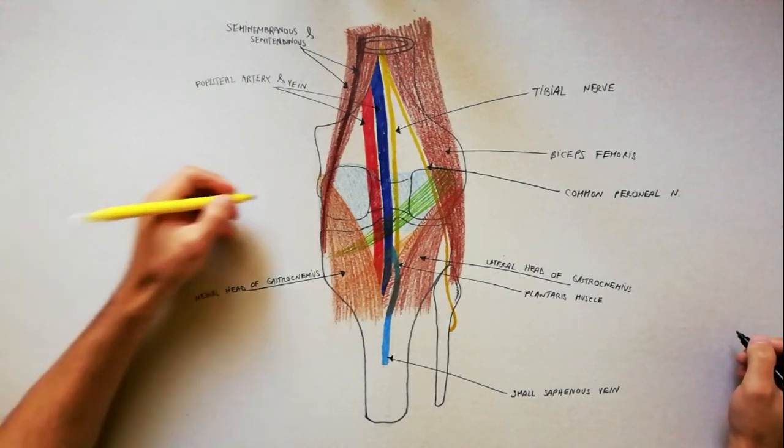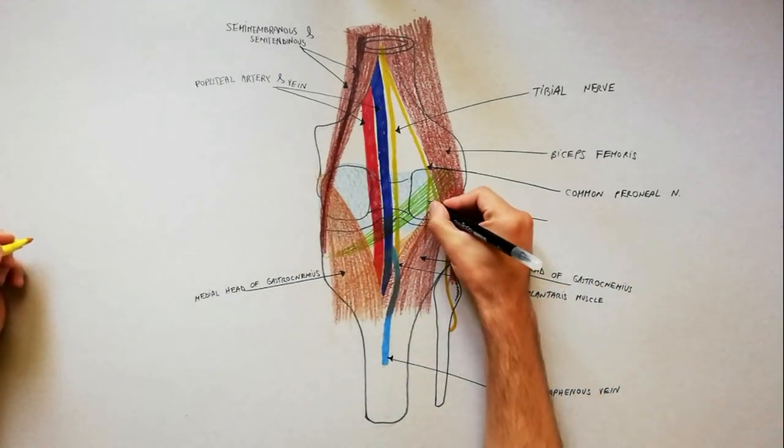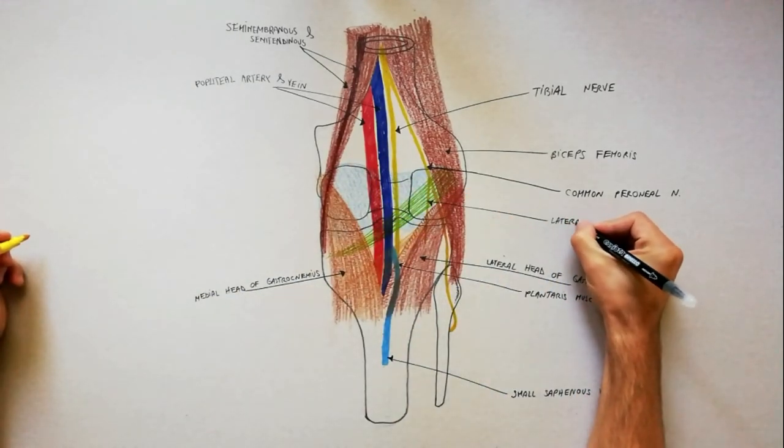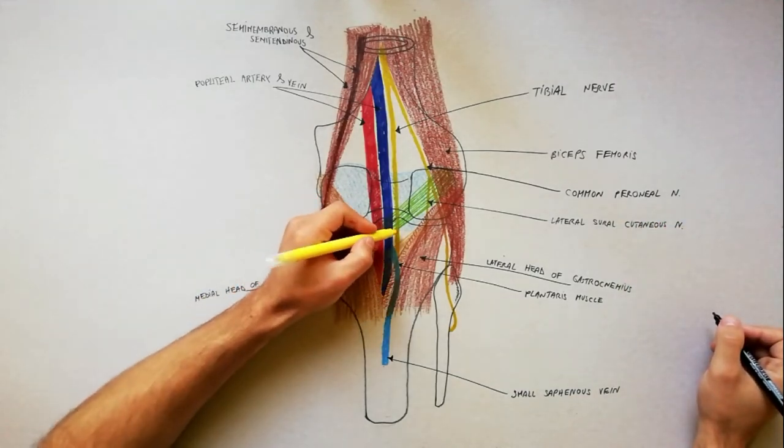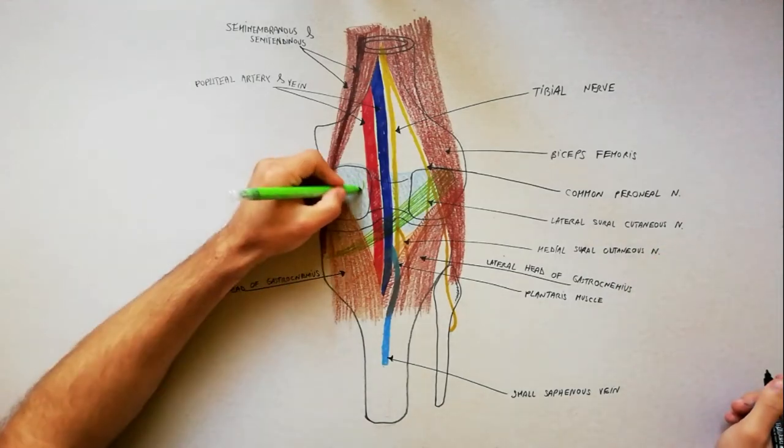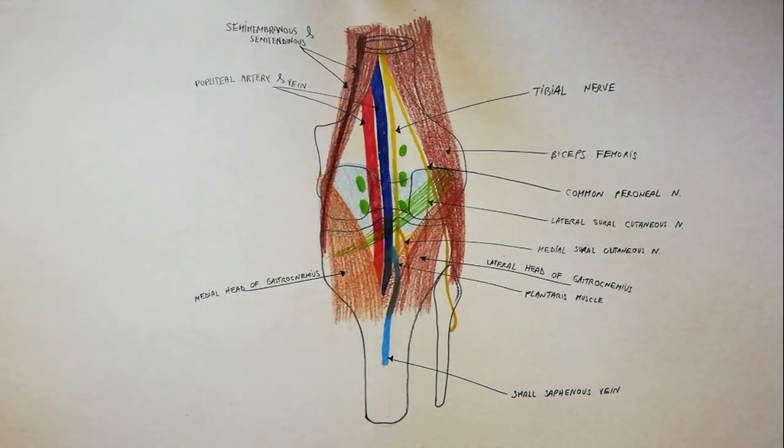At the level of the popliteal fossa, the common peroneal nerve gives off the lateral sural cutaneous nerve. The tibial nerve gives off the medial sural cutaneous nerve. Deeply embedded, numerous lymph nodes are also present in the popliteal fossa.